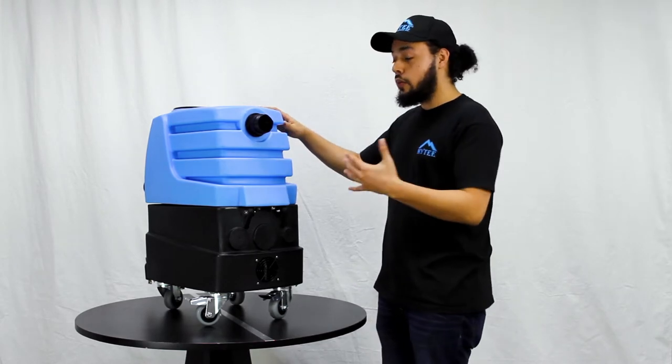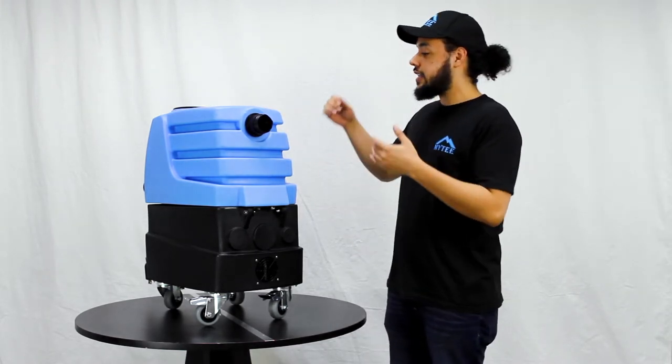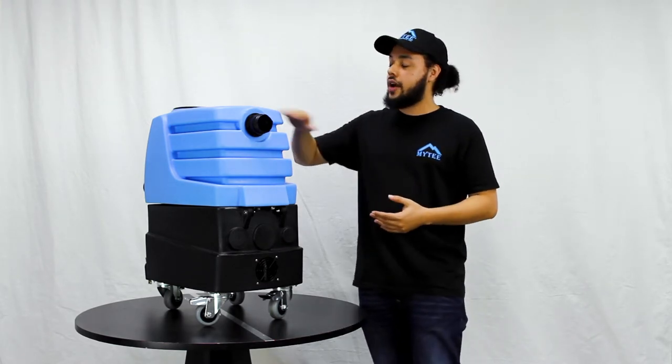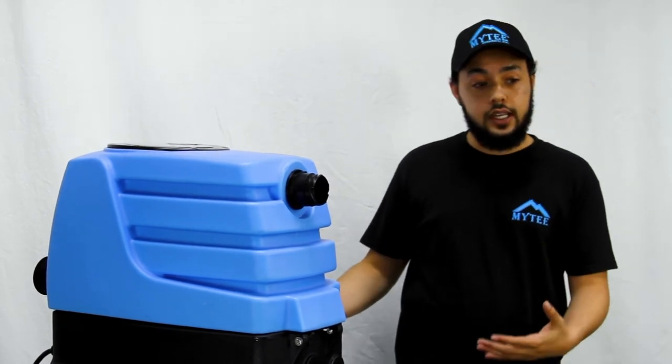The body is roto-molded on site from polyethylene, giving you that nice durable body that you've come to expect from Mighty. It's not going to scratch, it's not going to rust, and it also makes for a very lightweight machine as well.